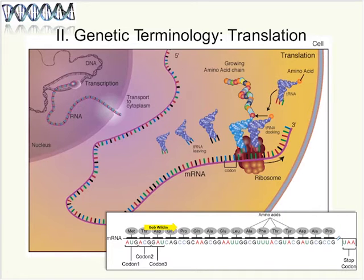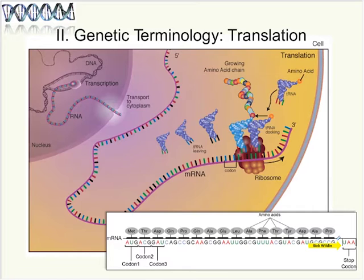The codon UAA is a stop codon, telling the ribosome to stop adding amino acids and release the protein. If the stop codon doesn't appear, or if a mutation results in a premature stop codon earlier in the gene, then that will result in early termination of the protein chain.